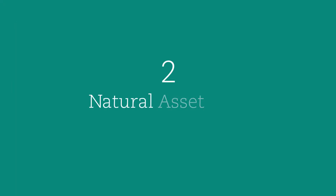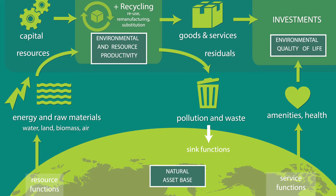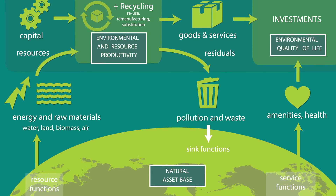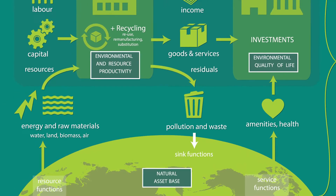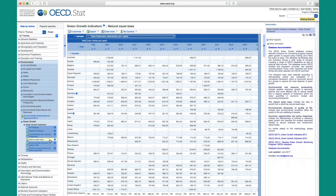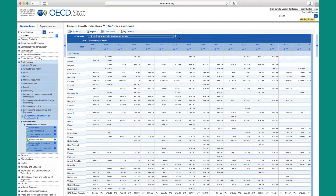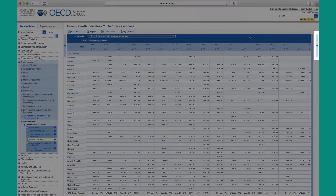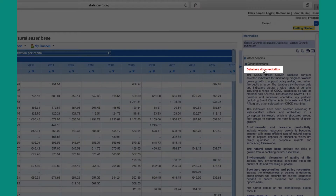The second group of indicators concerns the Natural Asset Base. These indicators are used to see if countries are maintaining their natural asset base intact and within sustainable thresholds. They help identify risks to future growth arising from a declining natural asset base. For example, we can take a look at how much freshwater is abstracted per capita. The sidebar on the right provides details and definitions to enrich your understanding of the data, and you also have the option to download the database documentation.